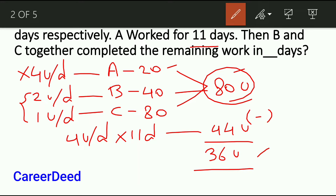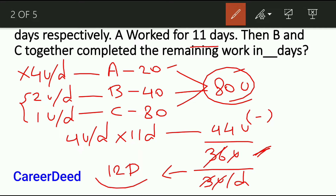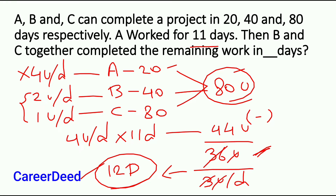The remaining 36 units will be completed by B and C: 36 ÷ 3 = 12. So in 12 days, B and C will complete the remaining job.